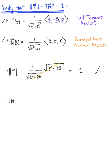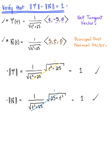Similarly, we check the principal unit normal vector. By the scalar multiple property, the length of N is 1/√(t² + 25) times the square root of 5² + t² + 0², which is √(t² + 25). Those cancel out to 1, showing that the length of the principal unit normal vector is also 1. We have verified that both vectors are unit vectors.